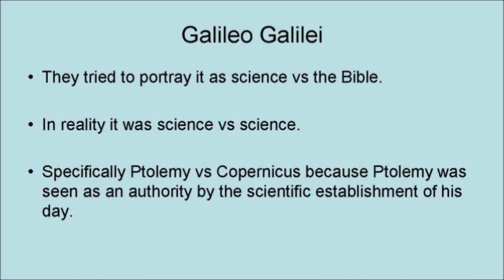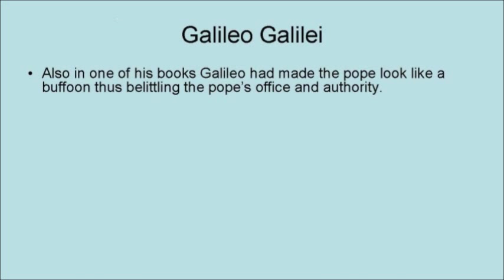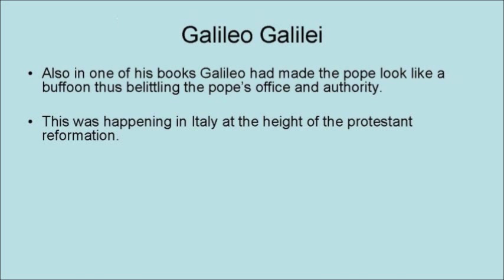Because Ptolemy was seen as an authority by the scientific establishment of Galileo's day. Also, in one of his books, Galileo had made the Pope look like a buffoon, thus belittling the Pope's office and authority. And this was all happening in Italy at the height of the Protestant Reformation.